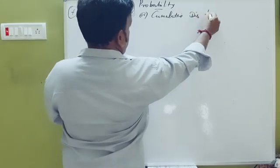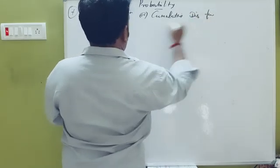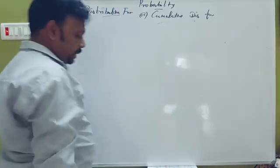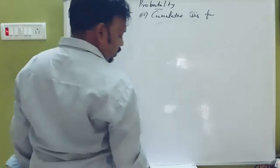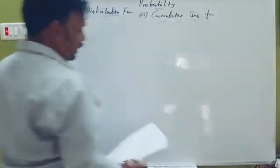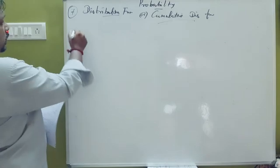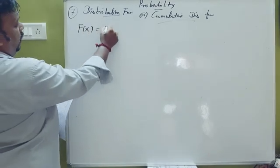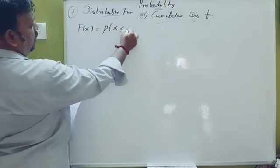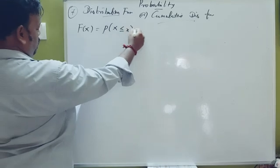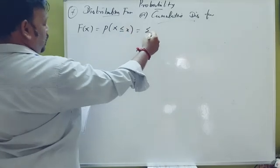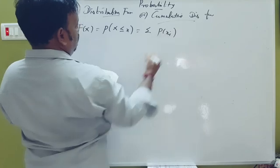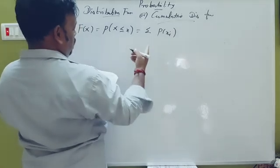The distribution function and cumulative distribution function are the same. The formula uses capital F of x, where F(x) equals the summation of p(x) for discrete cases.